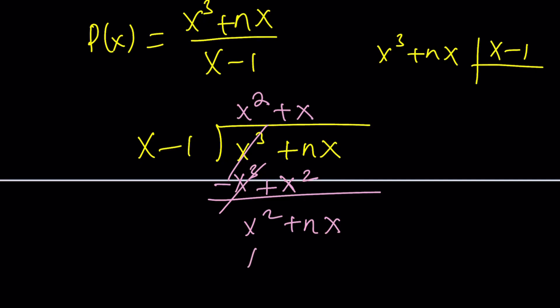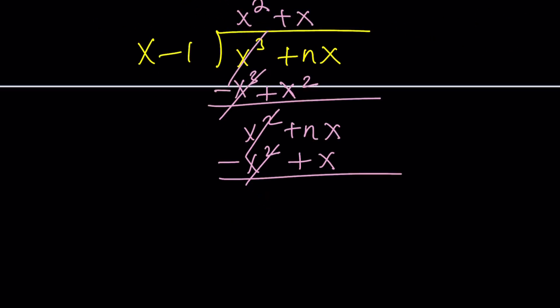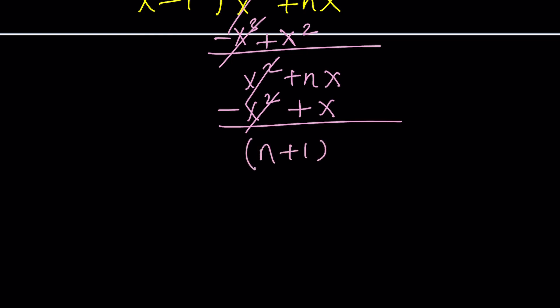And then we're going to have x into x squared, x times plus x. If you distribute, you get x squared minus x. And then if you negate and add again, you get nx plus x, which is n plus 1 multiplied by x.